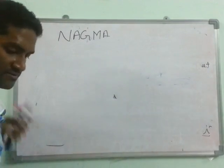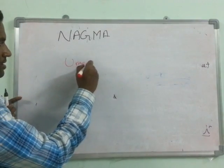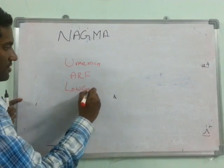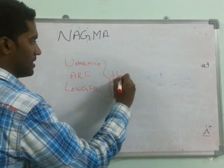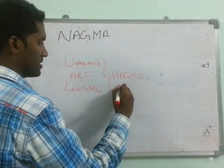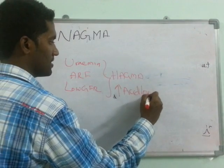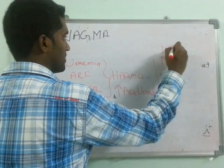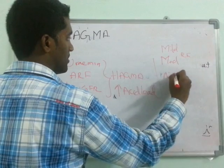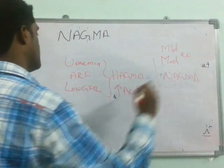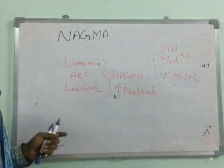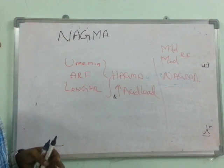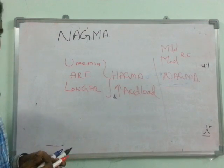Final thing to remember: in uremia or acute renal failure with very low GFR, it is usually high anion gap metabolic acidosis due to increased accumulation of acids within the body. In moderate or mild renal failure, it is usually non-anion gap metabolic acidosis. This concludes the topic of anion gap, high anion gap metabolic acidosis, normal anion gap metabolic acidosis, and the concept of urine anion gap. Thank you friends.